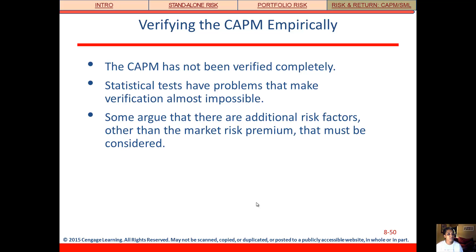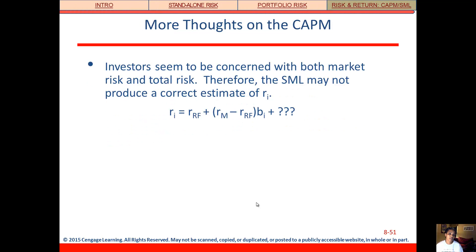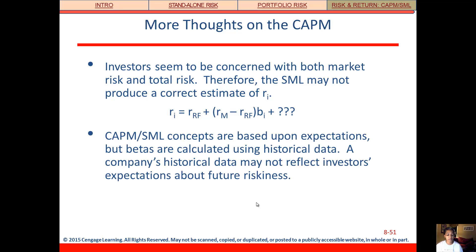Some final notes about CAPM: it hasn't been verified empirically, but it's the best model we have to explain or predict market returns. Studies have debated whether it measures the right things — market risk versus total risk — but it remains the best measure available. Some researchers add other elements to the model, but for this class we stick with basic CAPM.